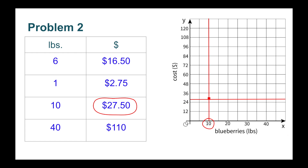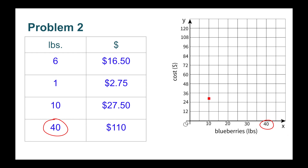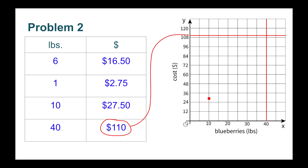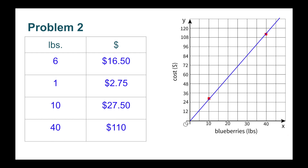10 pounds for $27.50. $27.50 would be somewhere between 24 and 36, a little bit closer to the 24, so I can put my point right about there. This point represents 10 pounds and $27.50. 40 pounds and $110 — $110 would be just above $108, and I would put my point there. This point represents 40 pounds at $110. This line represents the relationship between pounds of blueberries and the cost in dollars.